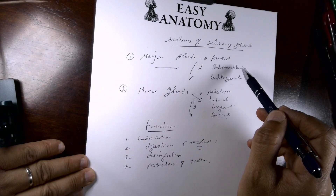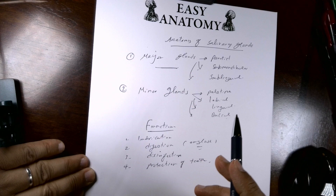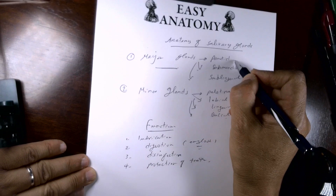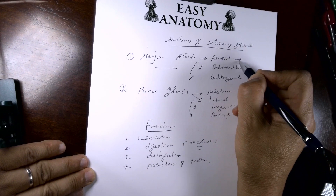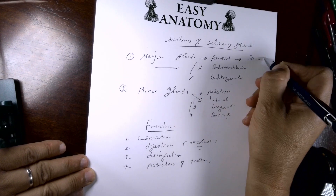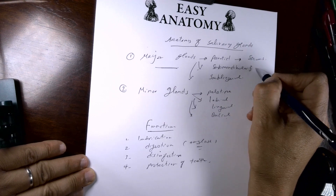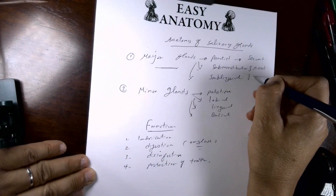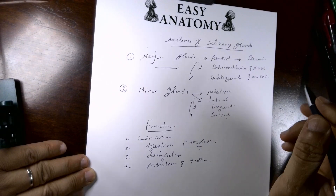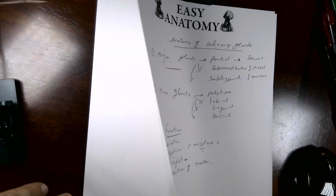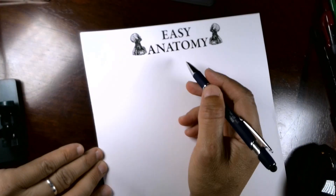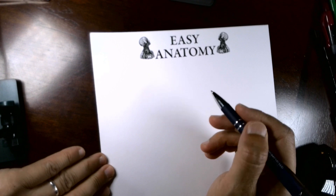We'll start with the anatomy of the parotid gland. Before going into detail, note that the parotid gland is the largest and is serous; the submandibular is mixed serous and mucous; and the sublingual is primarily mucous.